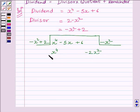Now, subtracting the like terms and bringing down the rest of the terms of the dividend, we get 2x squared minus 5x plus 6. We have arranged all the terms in decreasing order of their degrees.